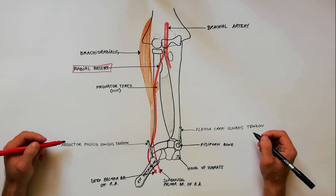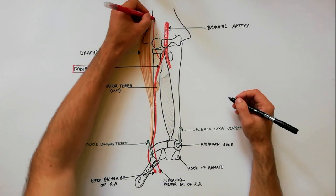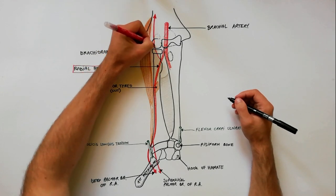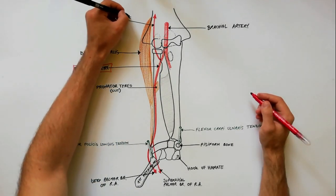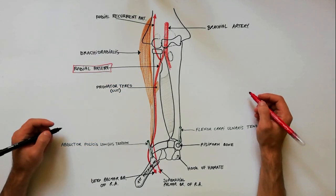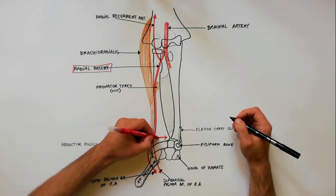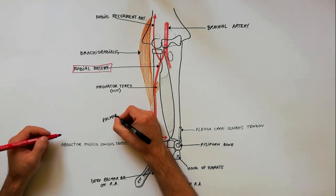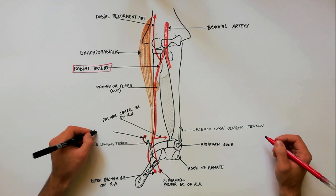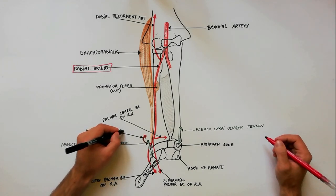Other branches from the radial artery are the following. Soon after its origin, the radial artery gives off the radial recurrent artery. Close to the wrist, the radial artery gives off two small branches, the palmar carpal branch of radial artery and the dorsal carpal branch of radial artery.